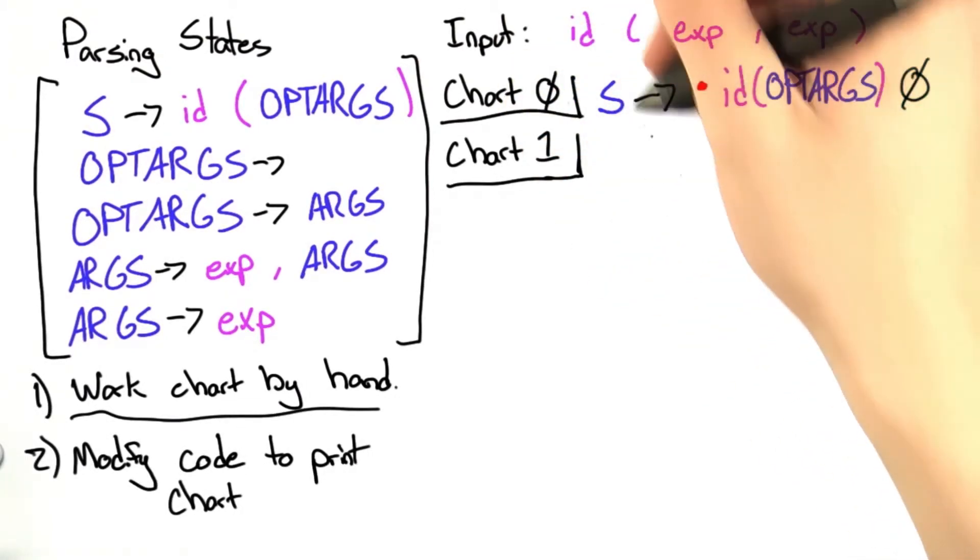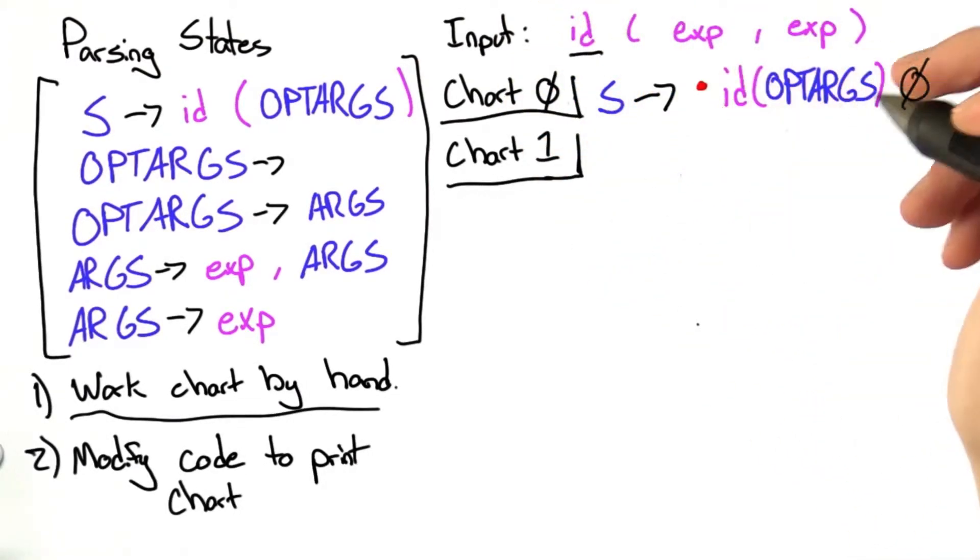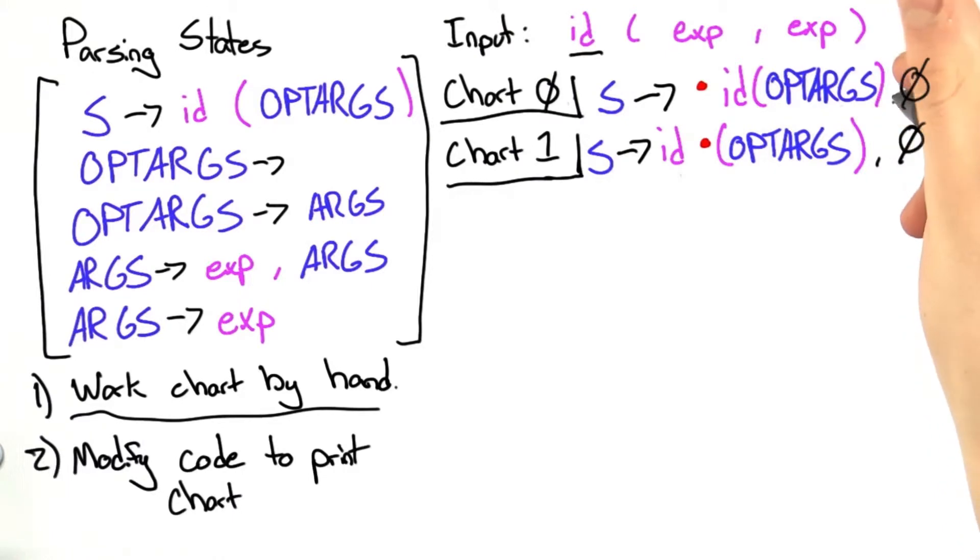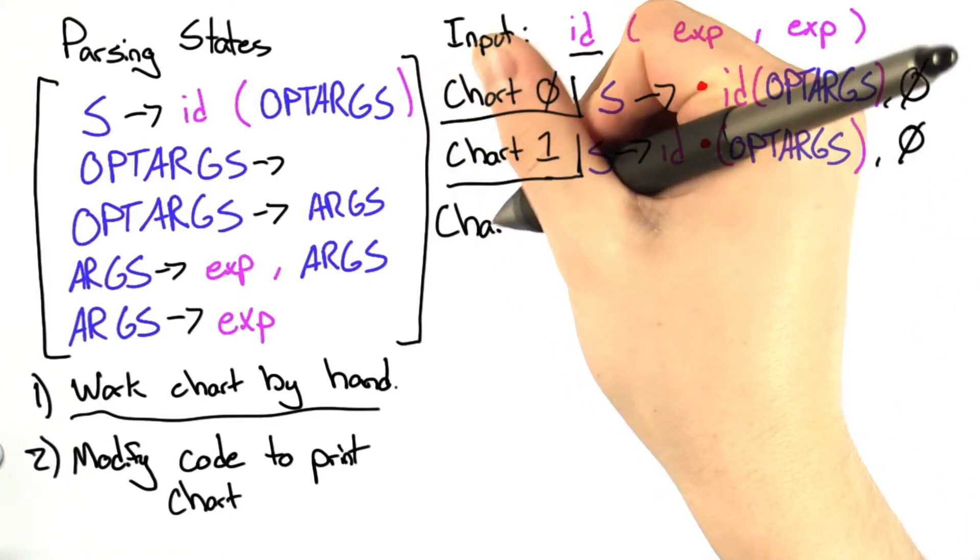Now we're on chart 1, and we've read in one token, id. We're just going to shift on this rule because id is the first token in this rule. This comes from 0 as well.